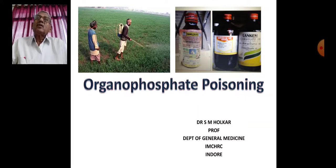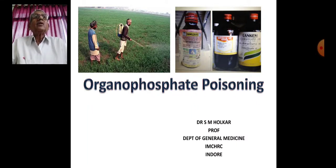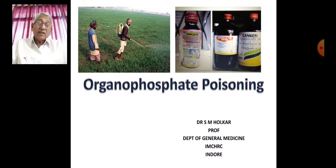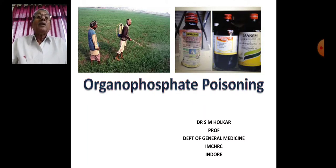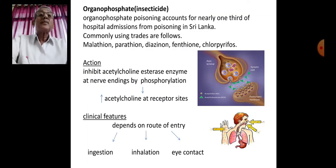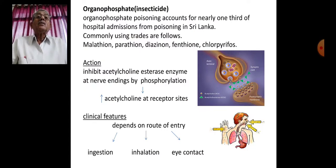Other common poisonings include snake bite and sometimes phosgene. The majority of cases, either accidentally or due to suicide, involve an organophosphate compound. Organophosphate poisoning accounts for nearly one-third of hospital admissions.